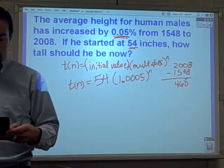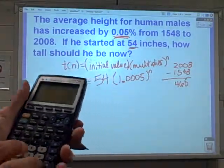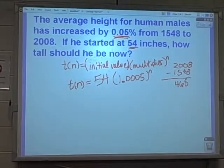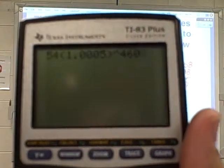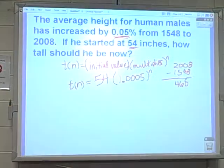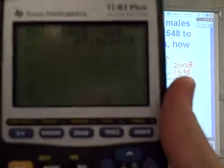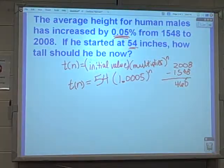So what I'm going to do is I'm going to take my calculator, plug in the 54, put in parentheses, 1.0005 to the 460th power. Let's see if we can get this in here so you can see it. 54, 1.0005 to that 460th power. And as I hit enter, I come up with 67.96 or about 68 inches.